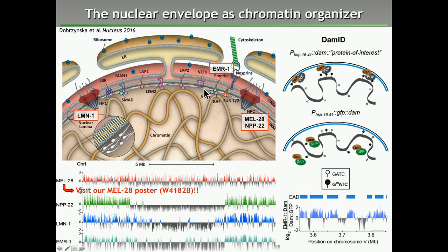We study transmembrane protein Lamin, or Lamin-1, from the nuclear lamina, as well as several proteins of the nuclear pore complex like MEL-28 and MPP-22. Comparing these four different profiles from chromosome 1, we can see that the profile of MPP-22 is much more similar to the Lamin and Emerin proteins compared to MEL-28, suggesting that different nuclear pore proteins contact different parts of the chromatin.